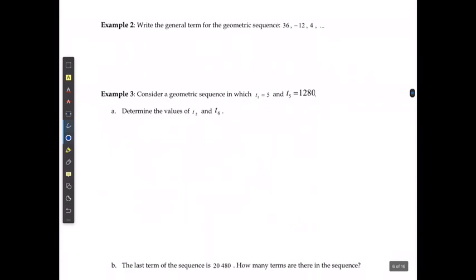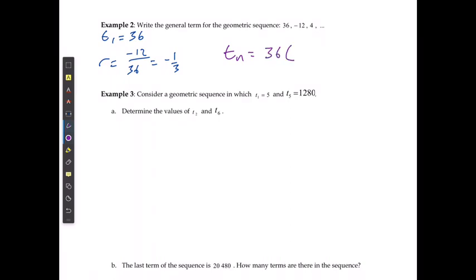For example 2, when it wants us to write the general term for this geometric sequence, I know that term 1 is equal to 36. I know the ratio is going to equal negative 12 over 36, which is negative 1 third. So the general term, or Tn, is going to equal 36 times negative 1 over 3 to the power of n minus 1.